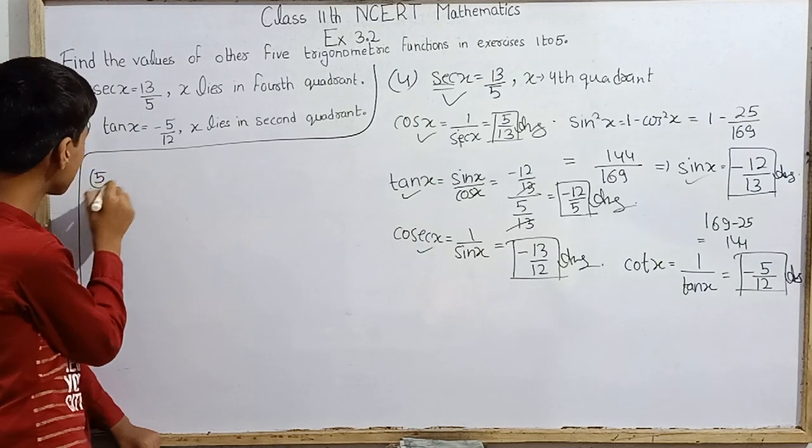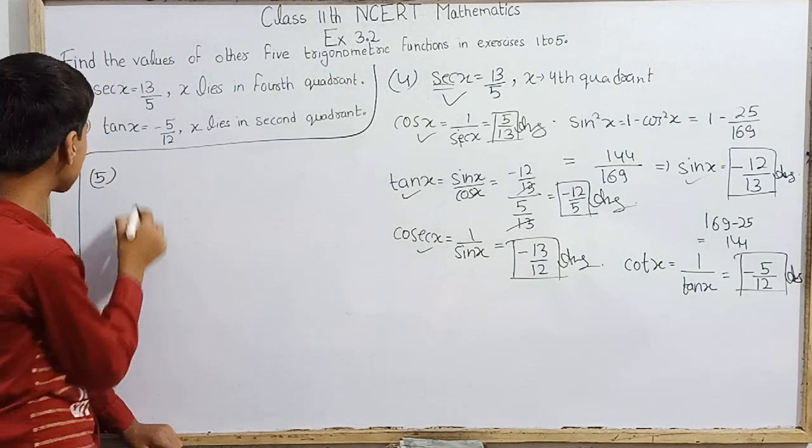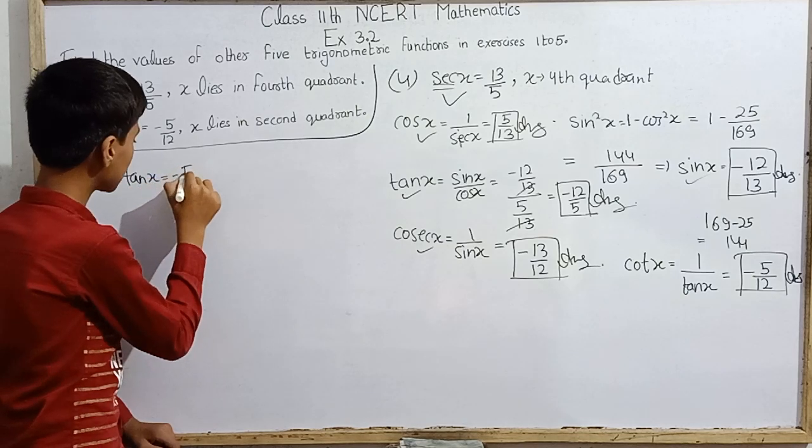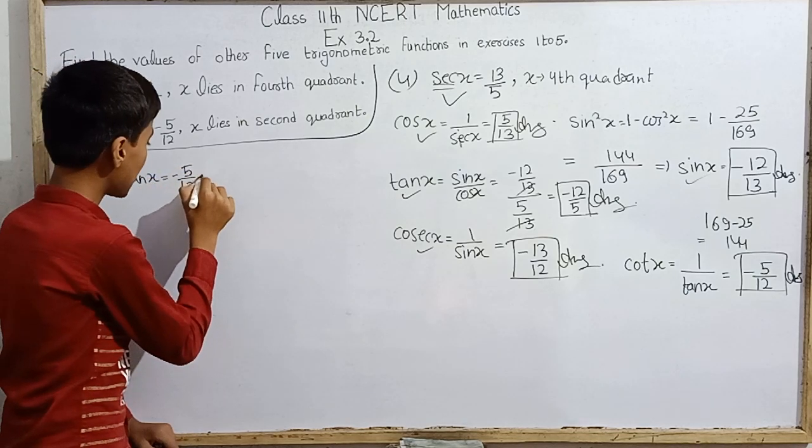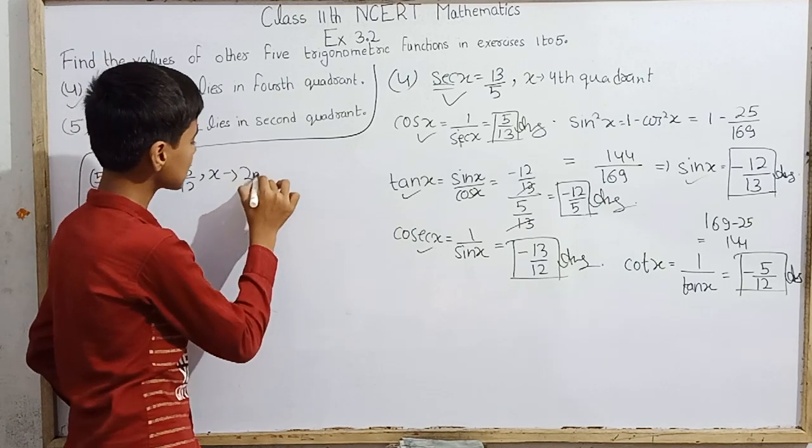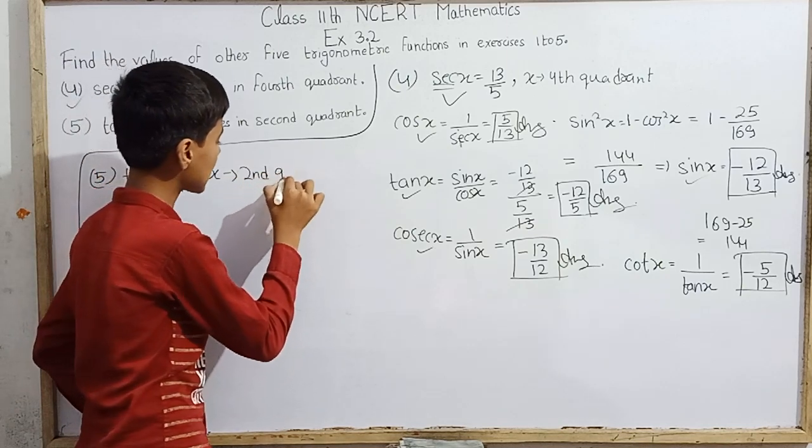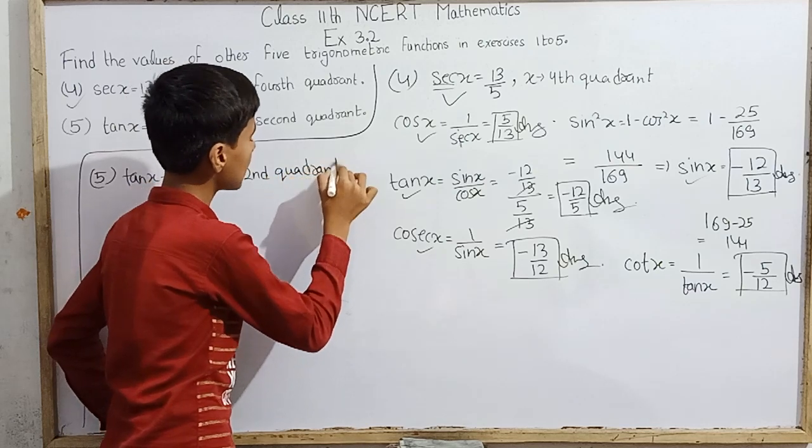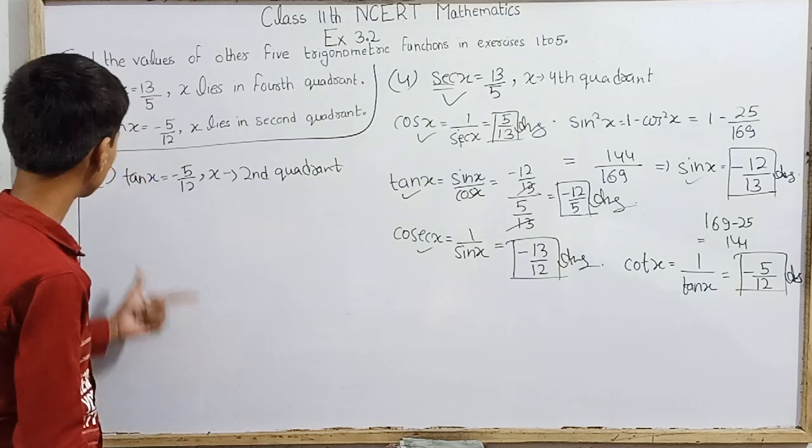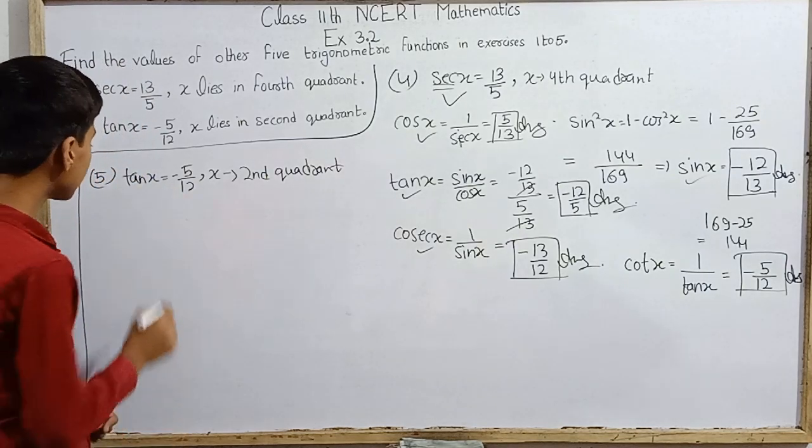We come to question 5. These are easy questions, but fun too. Tan x is given as minus 5 over 12, and it's very important that x lies in the second quadrant. Let's begin with the tan x value.